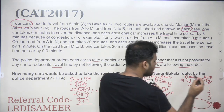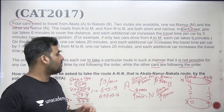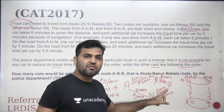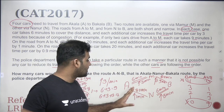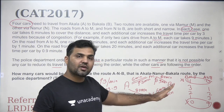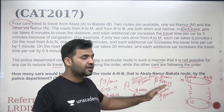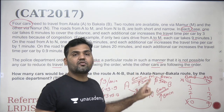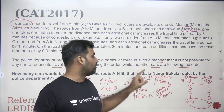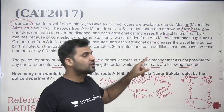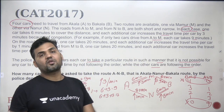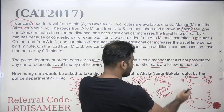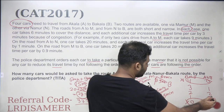Similarly, the 0-4 case is eliminated. If all cars are going from A to N to B and one car decides to use the A-M-B route, that car would be able to reduce its travel time. But the condition of the question is that no car should be able to reduce its travel time, so these options are eliminated.